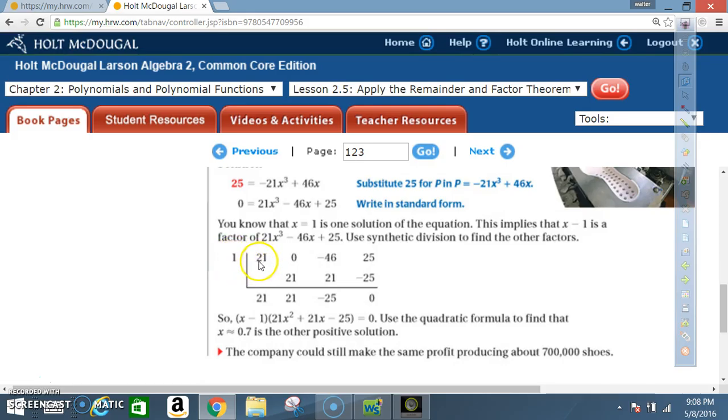We list our coefficients as usual: 21. Notice we got a zero here because we're missing the x² term, so this is like zero x². And then x has a coefficient of negative 46, and the constant is 25.